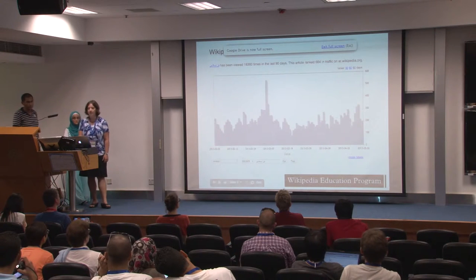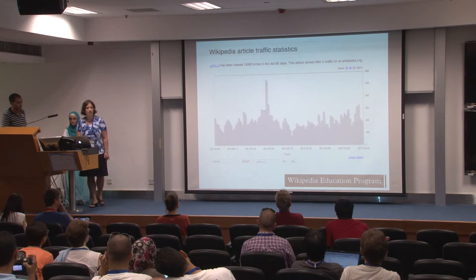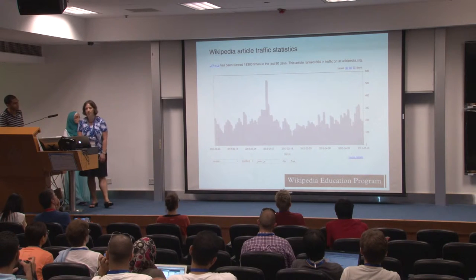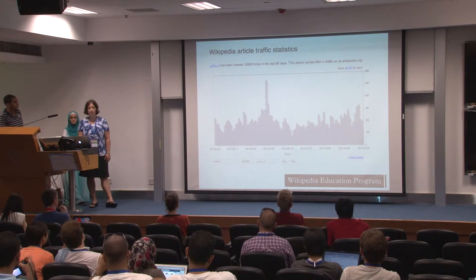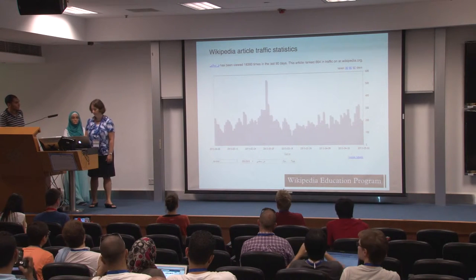There are also very important articles in terms of traffic. This is the page views for that particular Islamic art article — it gets around 200 page views a day, making it the 664th most trafficked article on the Arabic Wikipedia.